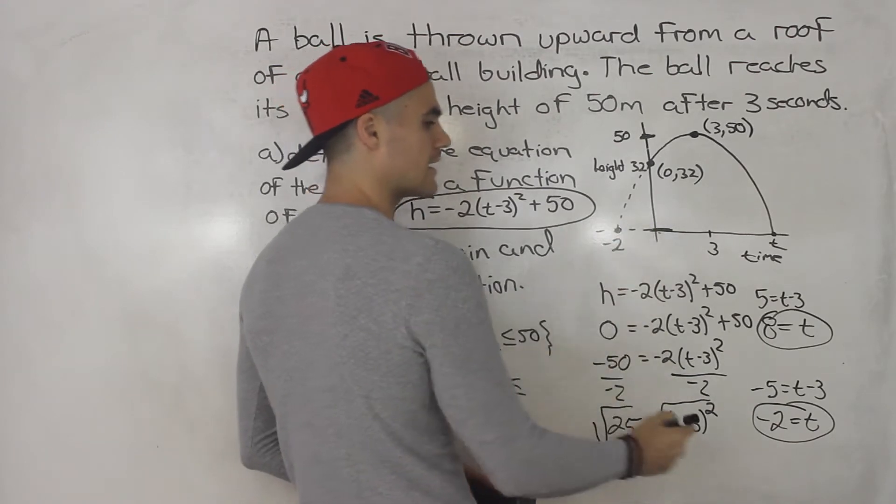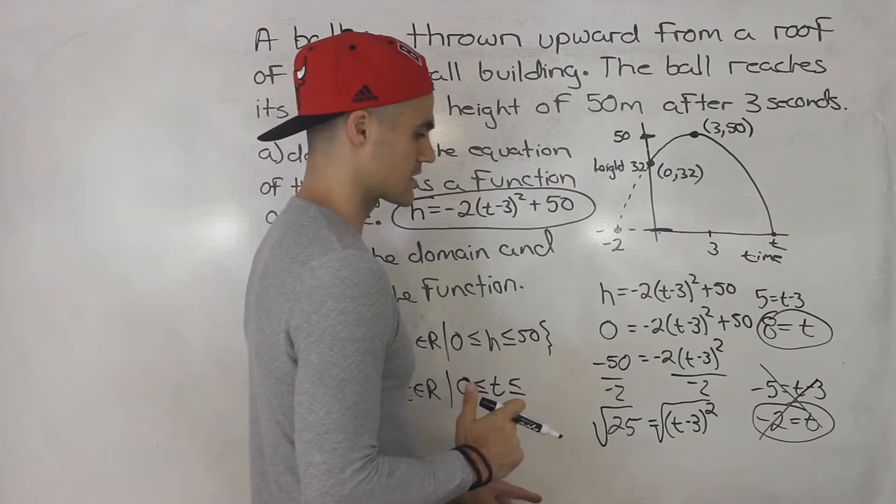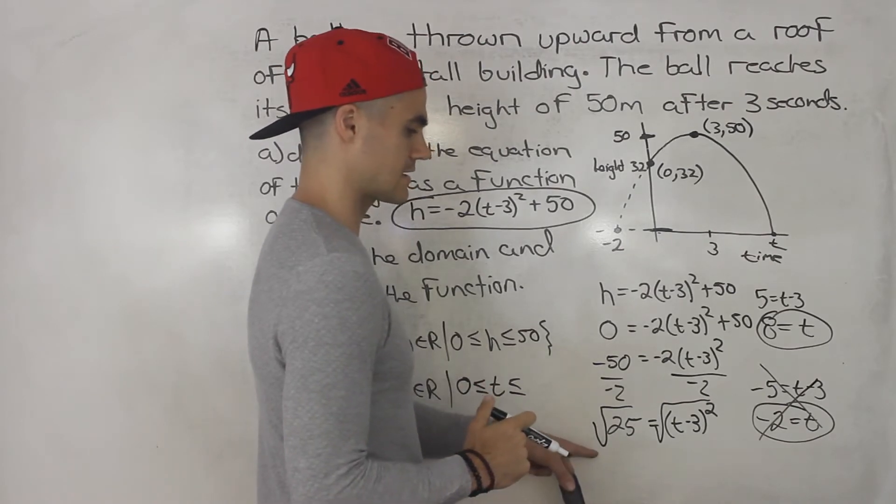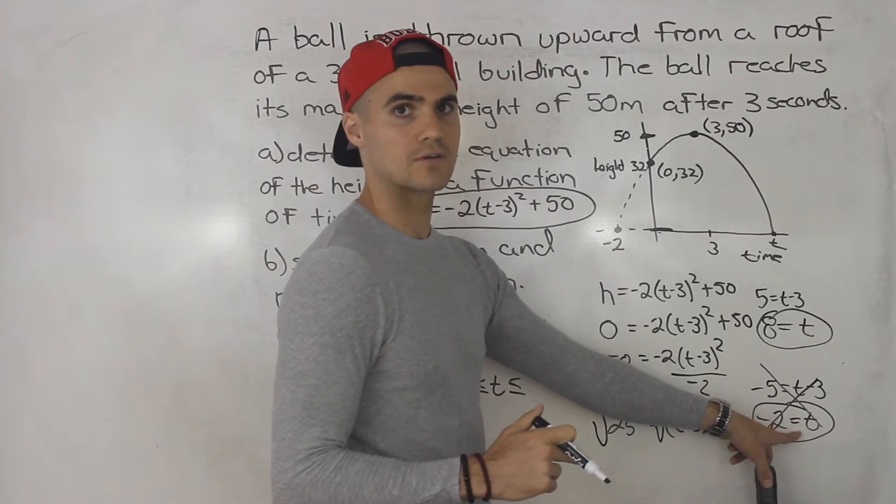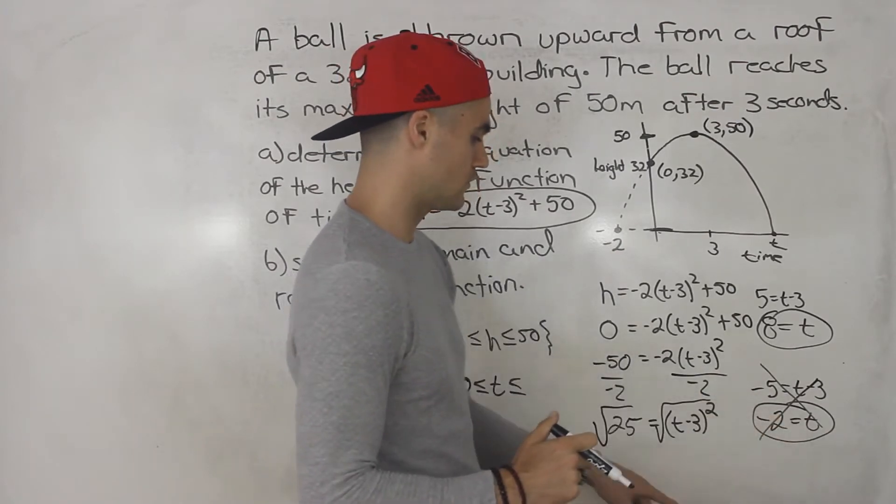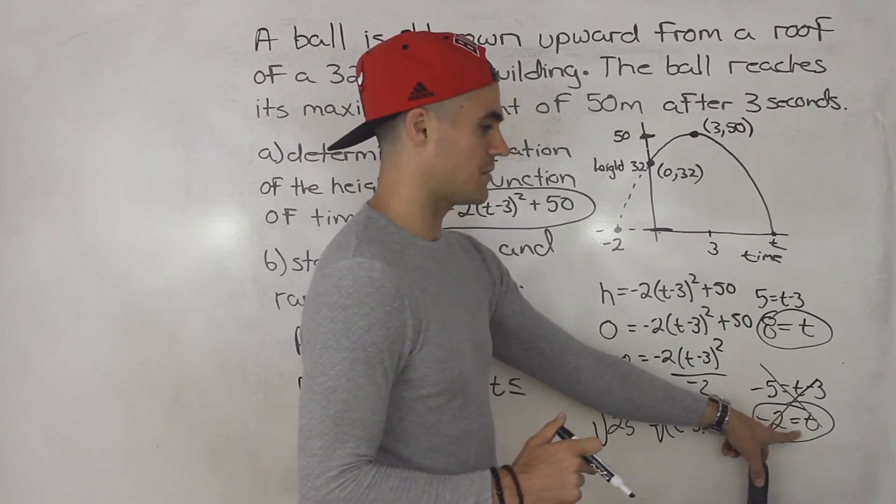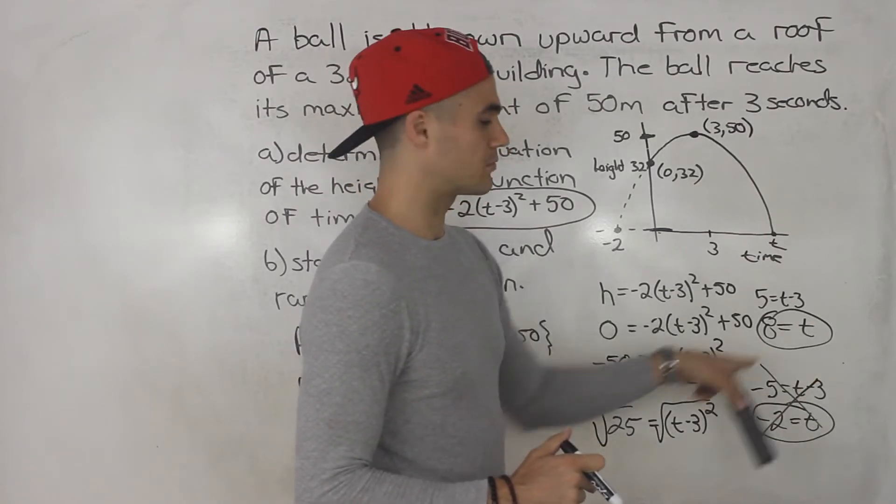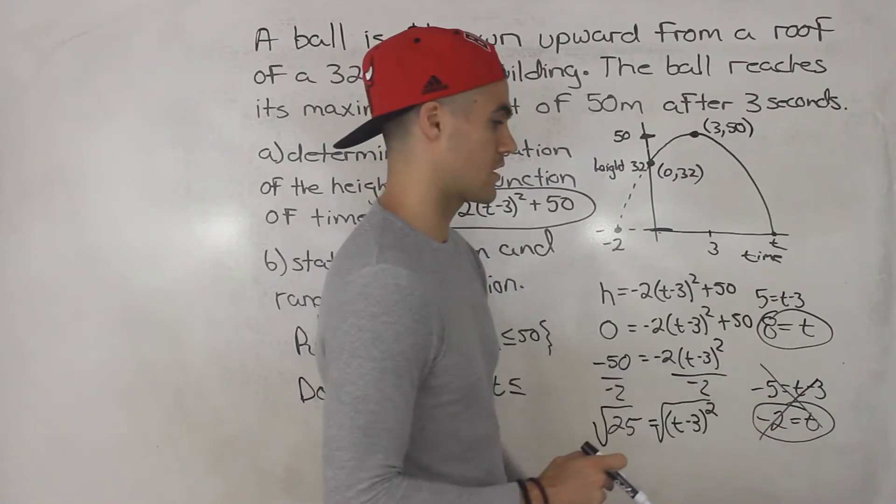Okay? But because time can't be negative, we can just ignore this solution. But nevertheless, you do want to take both cases and you want to make sure you see what that t value is. Because sometimes that t value, even though the square root is negative, that t value can be positive. So let's say this was like t minus 8, bring the 8 over, negative 5 plus 8 would give us positive 3.